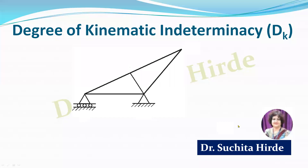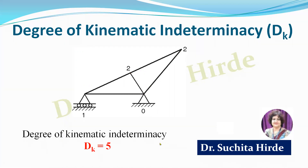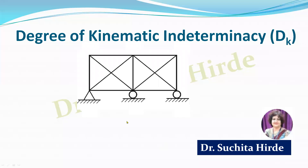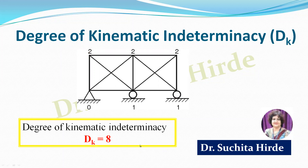Let us consider another example. For each joint, write 2; for hinge support, write 0; for roller support, write 1. Here at each pin joint the degree of freedom is 2 (U and V displacements). At roller support, 1. At hinge support, 0. Adding them gives degree of kinematic indeterminacy equal to 5. For the next truss, with one hinge support and two roller supports, count accordingly and you get degree of kinematic indeterminacy equal to 8.